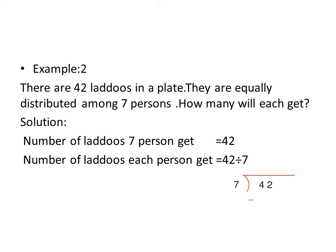Now recite the table of 7 until you get 42. 7 ones are 7, 7 twos are 14, 7 threes are 21, 7 fours are 28, 7 fives are 35, 7 sixes are 42. Write 42 here and 6 above the line as shown. Now subtract it and you will get 0.